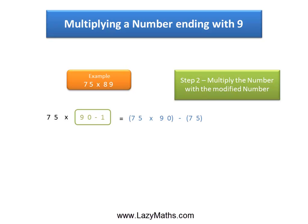75 times 90 can be multiplied using a shortcut available on lazymaths.com which shows you how to multiply any number with a 9. Using that shortcut, you can multiply 75 times 90 and you will get 6750 as the answer.